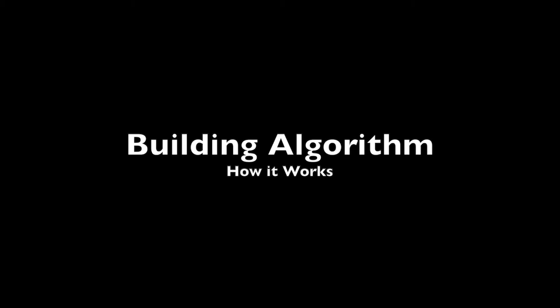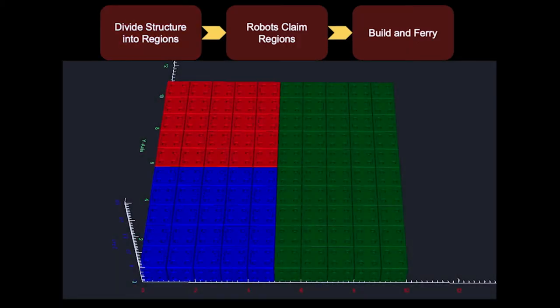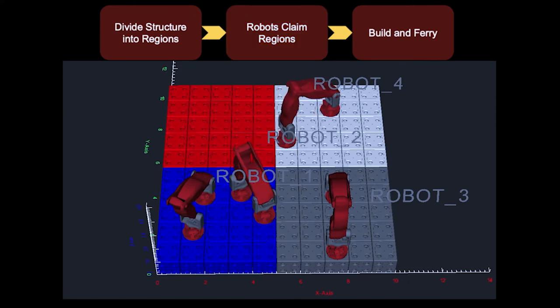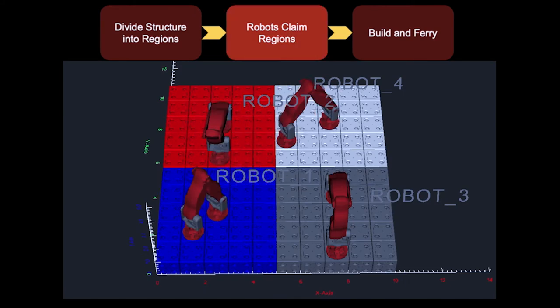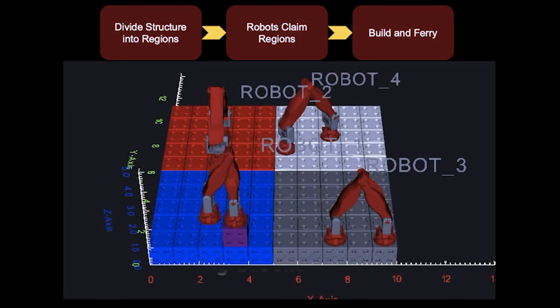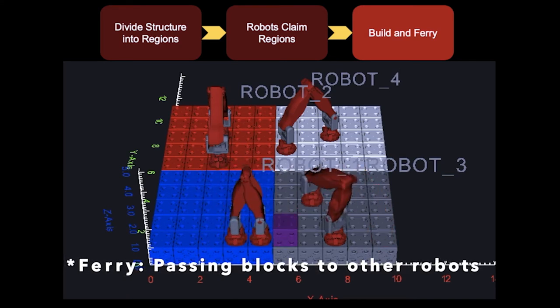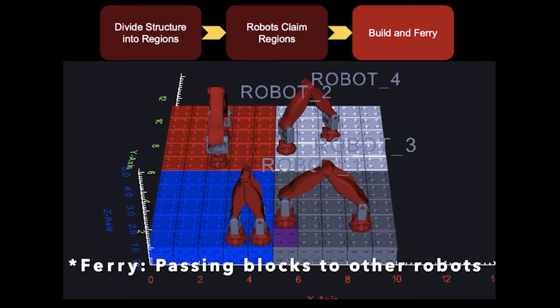The building algorithm works by dividing a given structure into different regions. The robots then distribute into one of these regions. Construction begins by moving blocks throughout the structure. If a robot receives a block in an area that has not been built, it will build that region, otherwise it will pass the block, or ferry, to other robots.